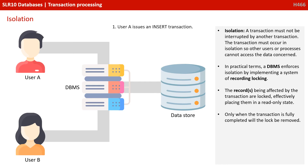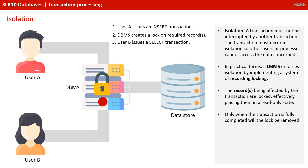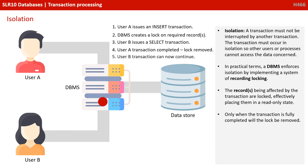Isolation. A transaction must not be interrupted by another transaction. The transaction must occur in isolation so other users or processes cannot access the data concerned. In practical terms, a DBMS enforces isolation by implementing a system of record locking. The records currently being affected by the transaction are locked, effectively placing them in a read-only or invisible state. Only when the transaction is fully completed will the lock be removed.